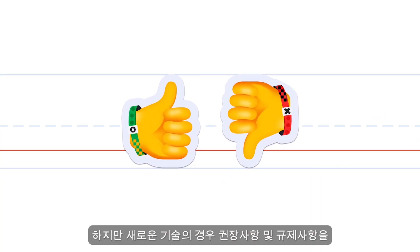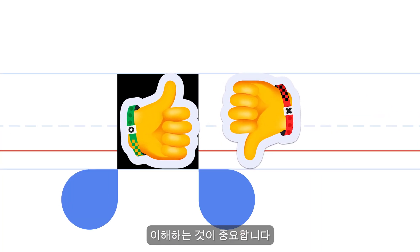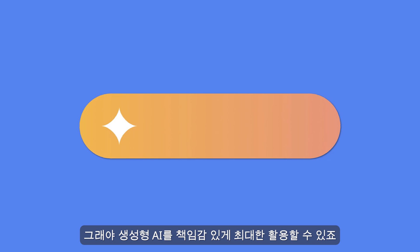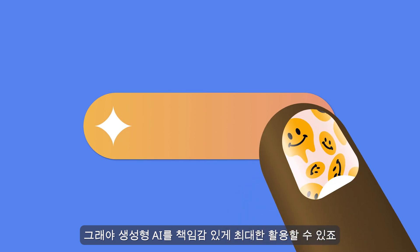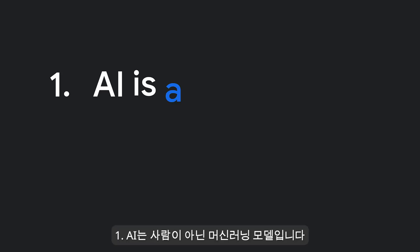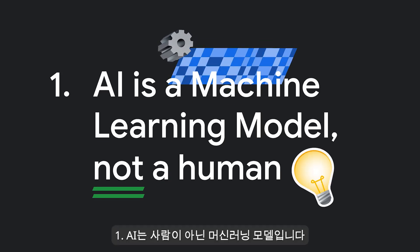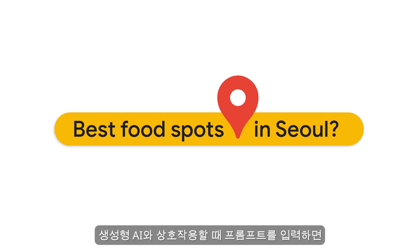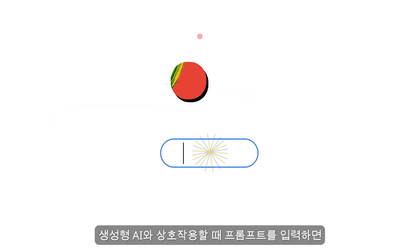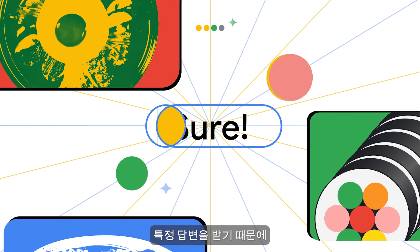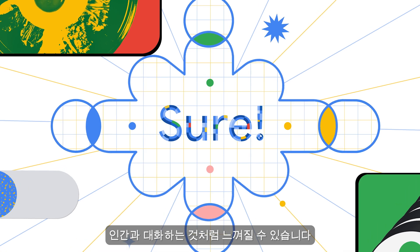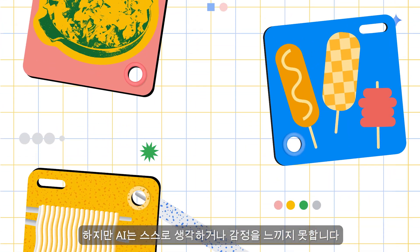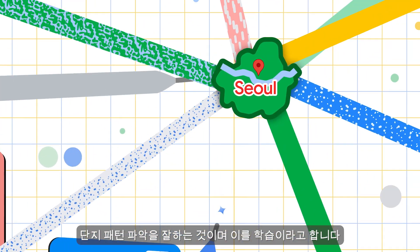But as with anything new, it's important to understand the do's and don'ts so you can get the most out of Generative AI responsibly. AI is a machine learning model, not a human. When you interact with Generative AI, you'll enter a prompt and the response might seem so unique, you may wonder if it's human.